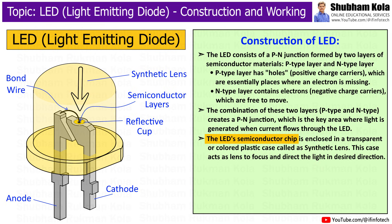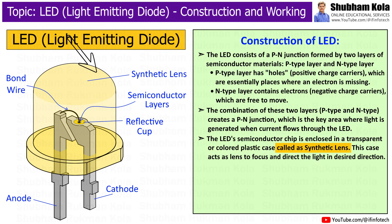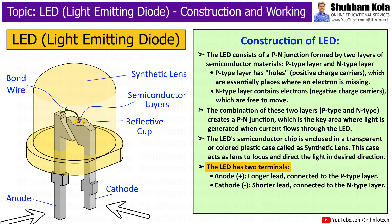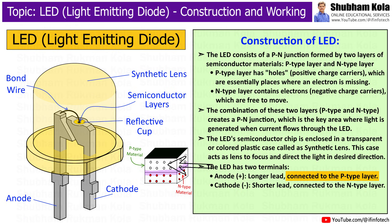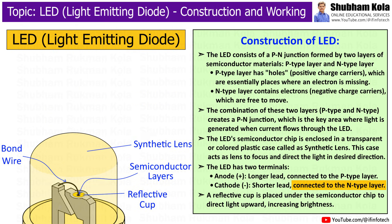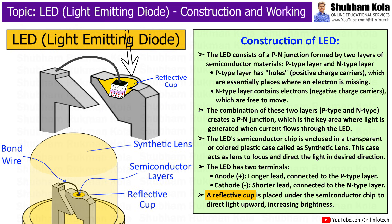The LED's semiconductor chip is enclosed in a transparent or coloured plastic case called a synthetic lens. This case acts as a lens to focus and direct the light in the desired direction. The LED has two terminals: anode and cathode. The anode is the longer lead connected to the p-type layer, and the cathode is the shorter lead connected to the n-type layer. A reflective cup is placed under the semiconductor chip to direct the light upward, increasing brightness.